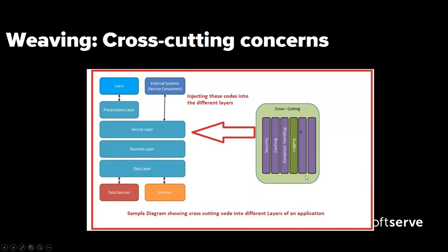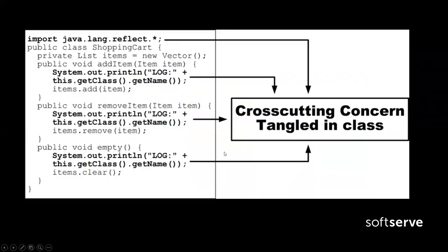Here are examples of cross-cutting concerns we can work with: security, caching, exception handling, and logging. Here is an example of how a cross-cutting concern is implemented manually in Java code. You can see this class has a print line — in this case, a logger. Most of us have a bunch of methods with logging injections, capturing exceptions and sending them to a log system or external system. But it would be better if our methods only implement what they have to do, and then inject logging or other metrics separately.